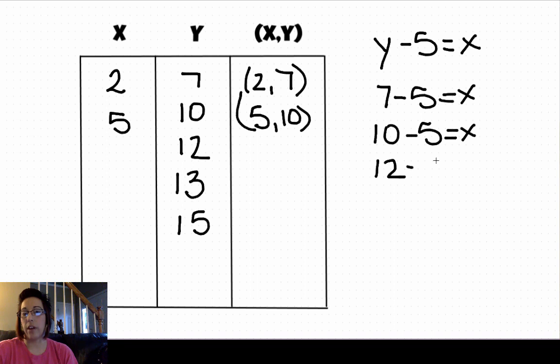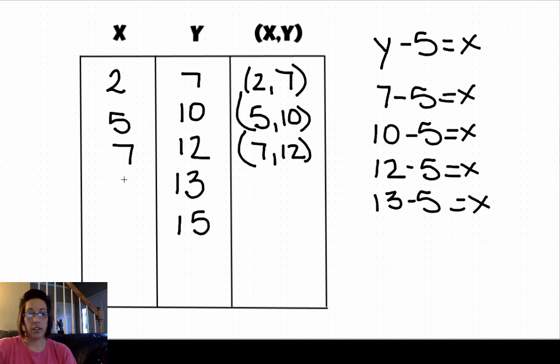12 minus 5 equals x. 12 minus 5 is 7. So our ordered pair is 7, 12. 13 minus 5 equals x. 13 minus 5 would be 8. So our ordered pair is 8, 13.